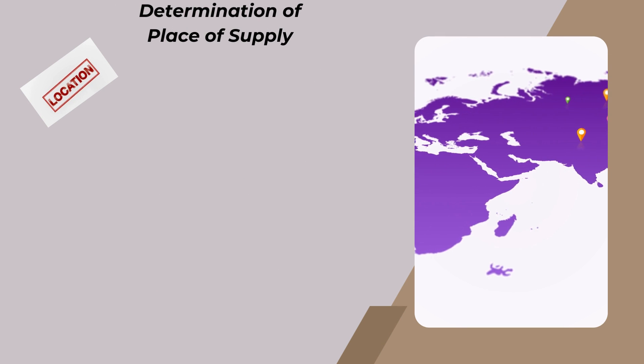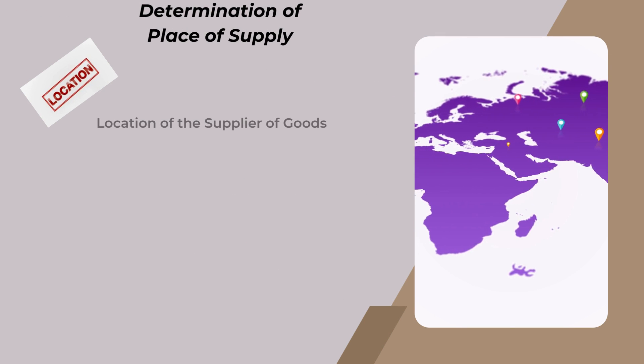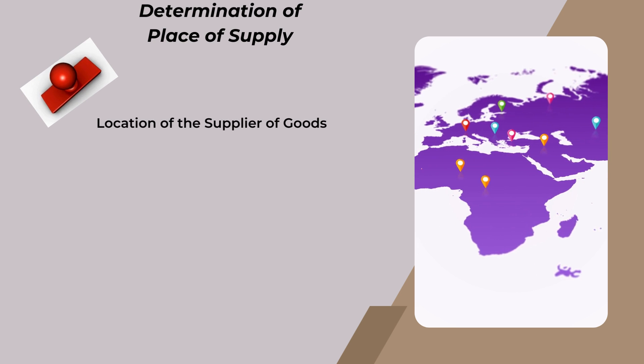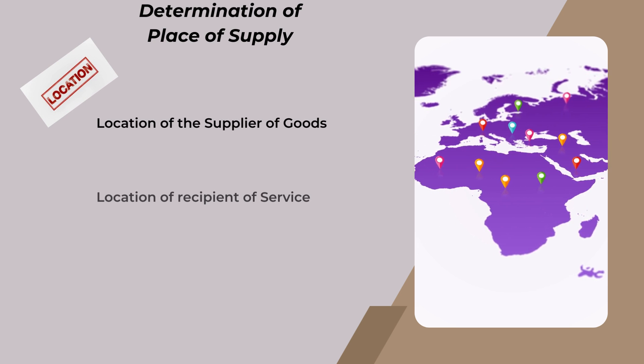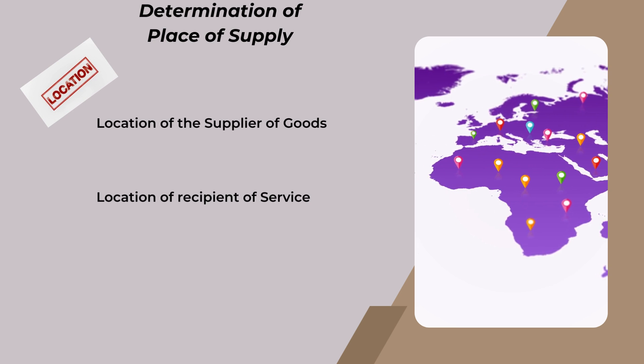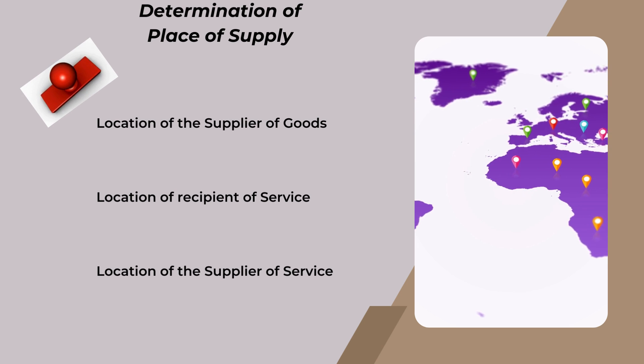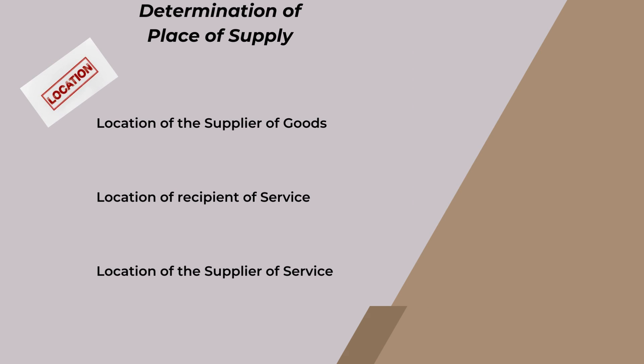For the determination of Place of Supply, three key factors are considered: the location of the supplier of goods, the location of the recipient of service, and the location of the supplier of service.